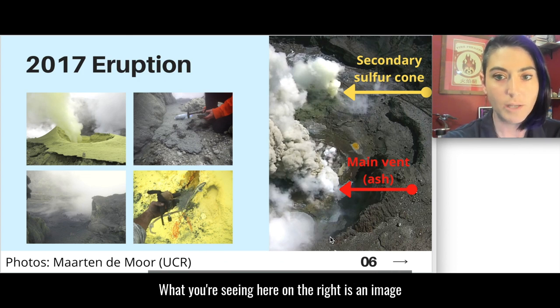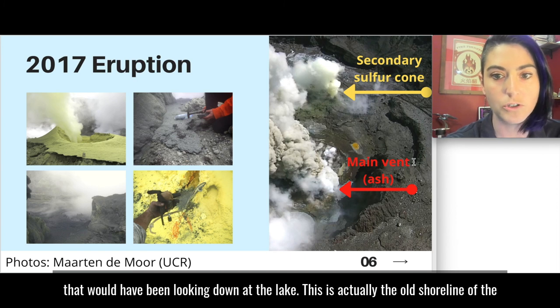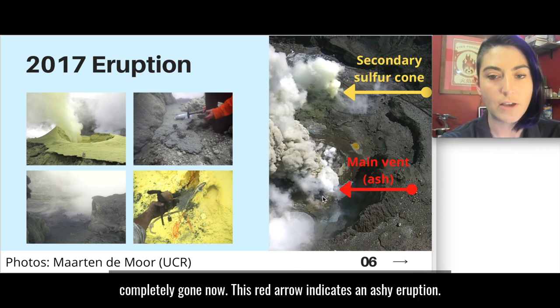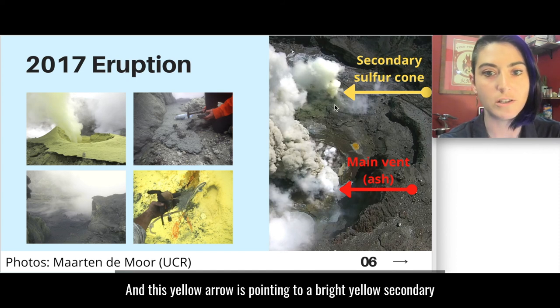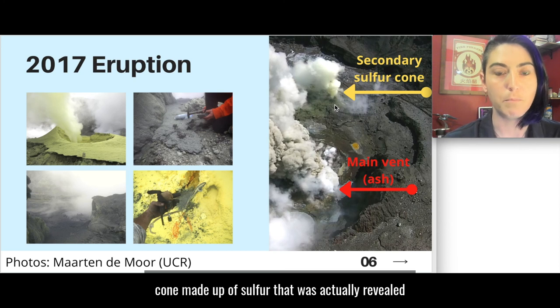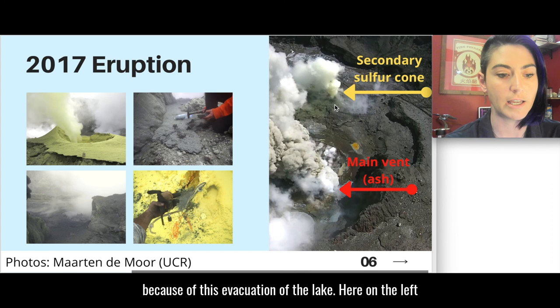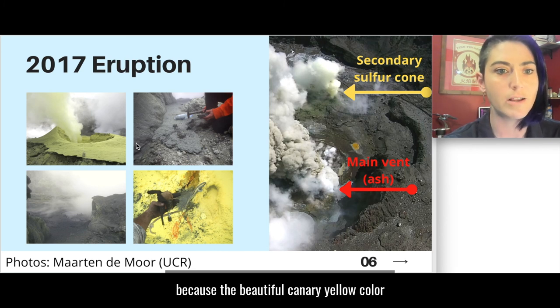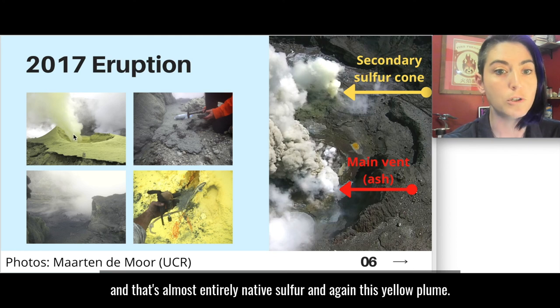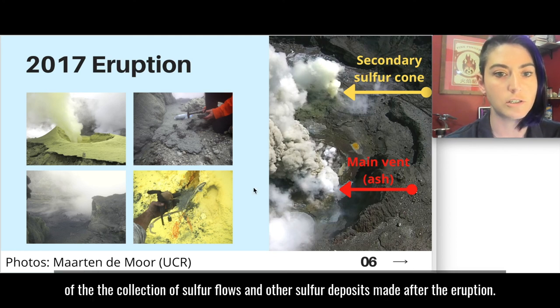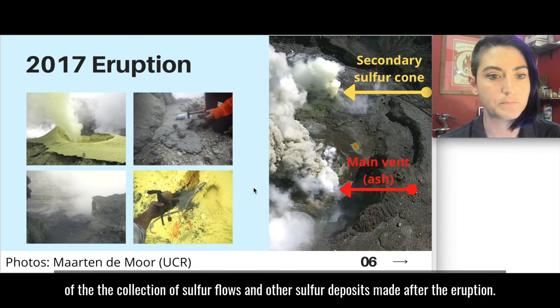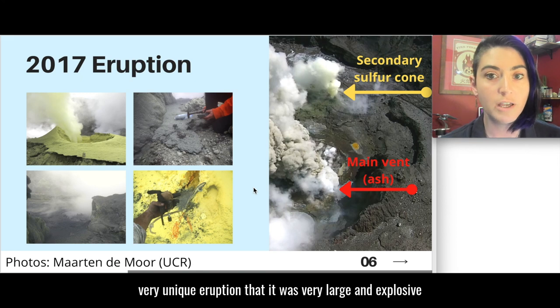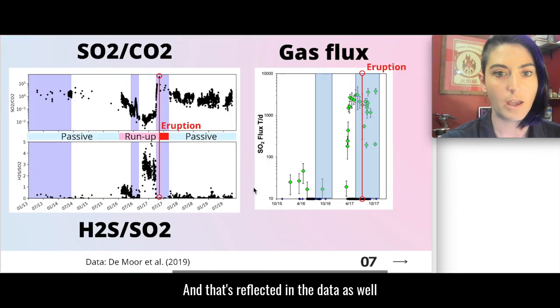What you're seeing here on the right is an image that would have been looking down at the lake. This is actually the old shoreline of the lake that was there before the eruption. You can see the water is completely gone now. This red arrow indicates an ashy eruption and this yellow arrow is pointing to a bright yellow secondary cone made up of sulfur that was actually revealed because of this evacuation of the lake. Here on the left you can see more pictures. This one here is a picture of that same cone. It's this beautiful canary yellow color and that's almost entirely native sulfur. In fact all of the images I'm showing here are images of the collection of sulfur flows and other sulfur deposits made after the eruption.